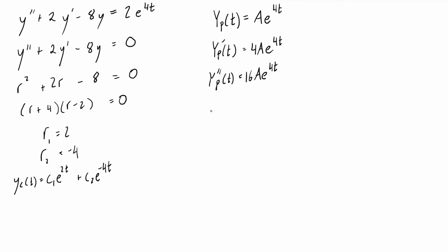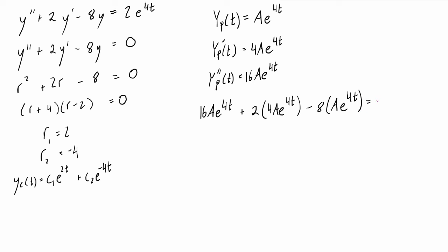Now we plug these into our original differential equation. We substitute y_p where y goes, the first derivative where y' goes, and the second derivative where y'' goes. This gives us: 16Ae^(4t) + 2(4Ae^(4t)) − 8(Ae^(4t)) = 2e^(4t).